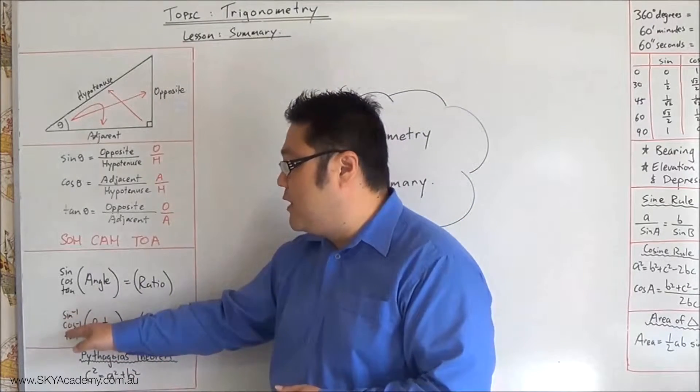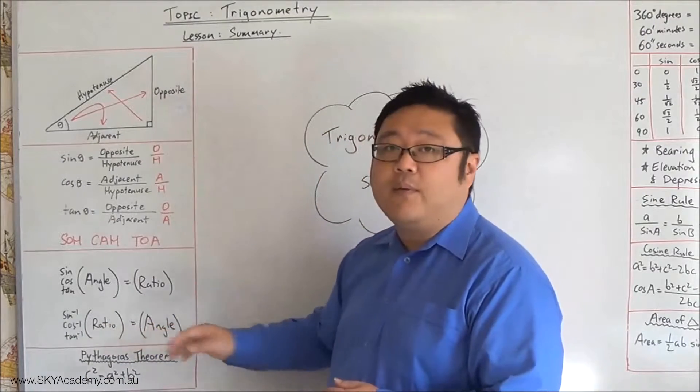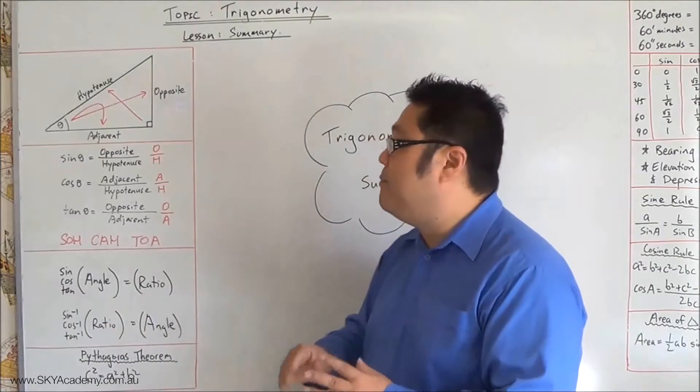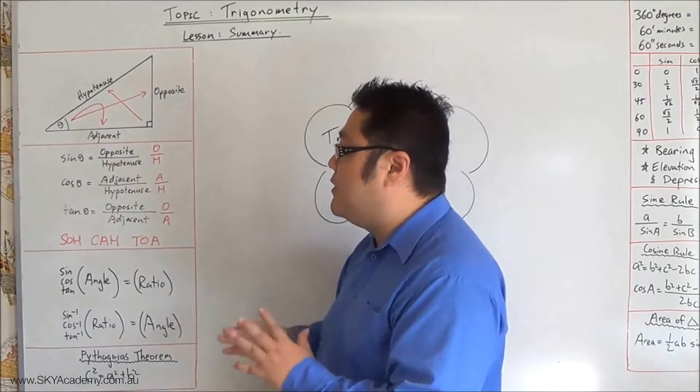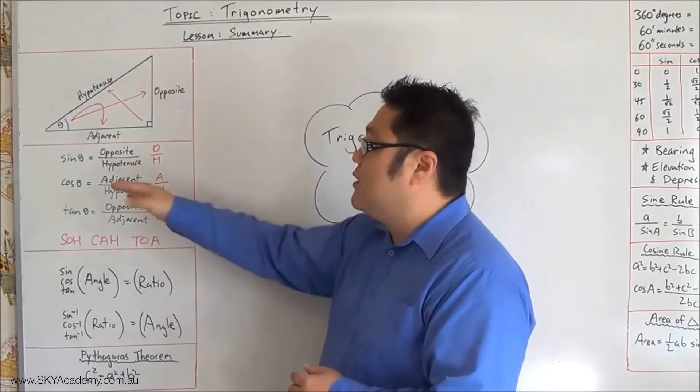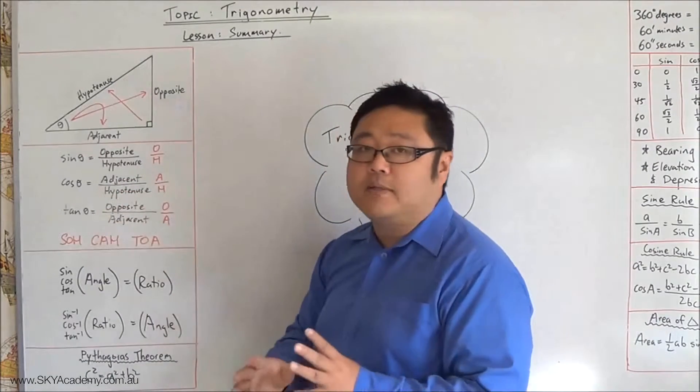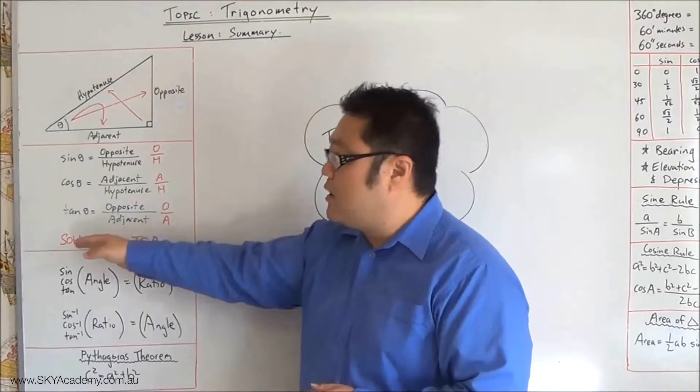So basically sin, cos, and tan are applied to angles to give you a ratio, and then the opposite of that is working out the inverse sin, inverse cos, and inverse tan of a ratio to give you an angle. Basically sin is equal to the opposite over the hypotenuse, cos is equal to the adjacent over the hypotenuse, and tan is equal to the opposite over adjacent, so SOHCAHTOA is the way to remember it.